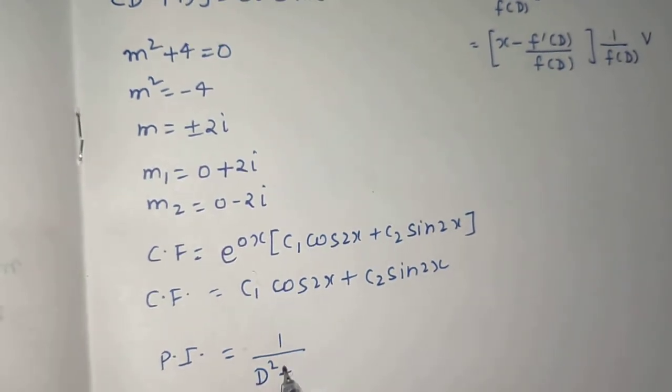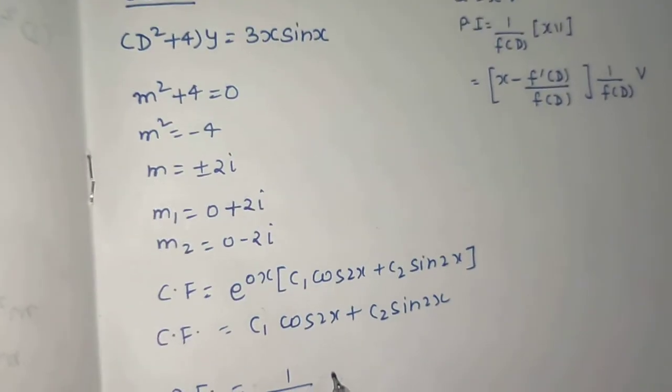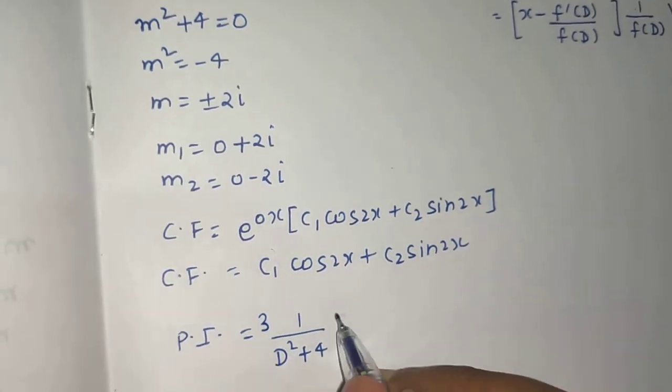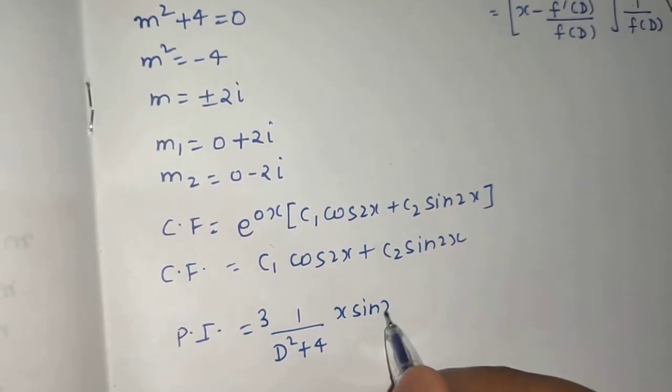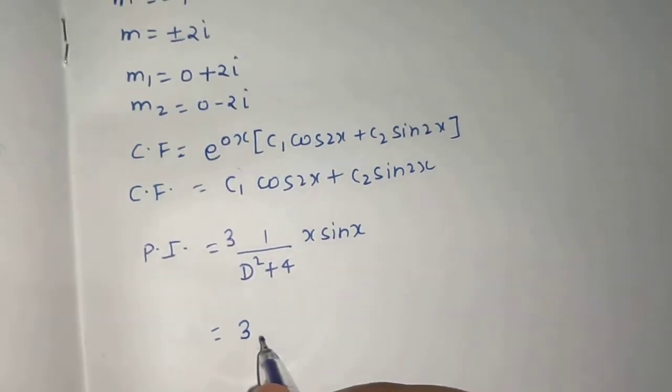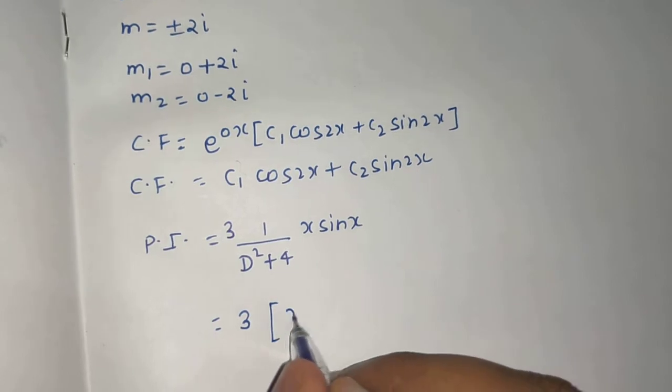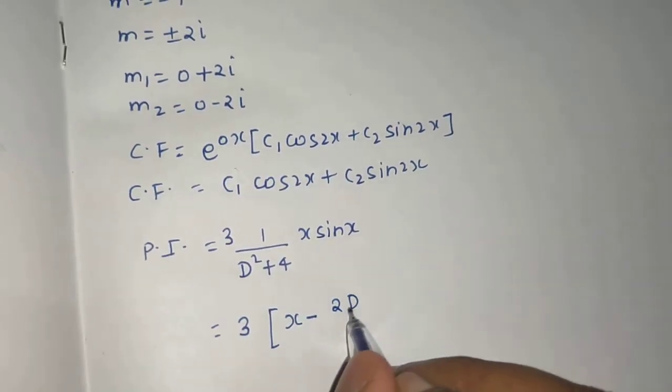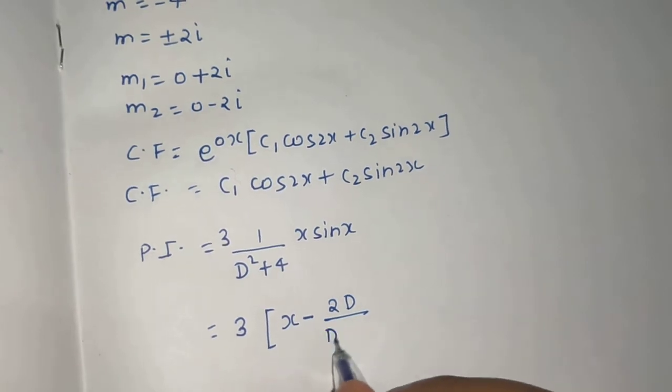D² + 4 operating on the RHS, which is 3x·sin(x). So I can take 3 out and x·sin(x) remains inside. Now I will apply this rule. So 3[x - derivative of this, which is 2D divided by this thing D² + 4].